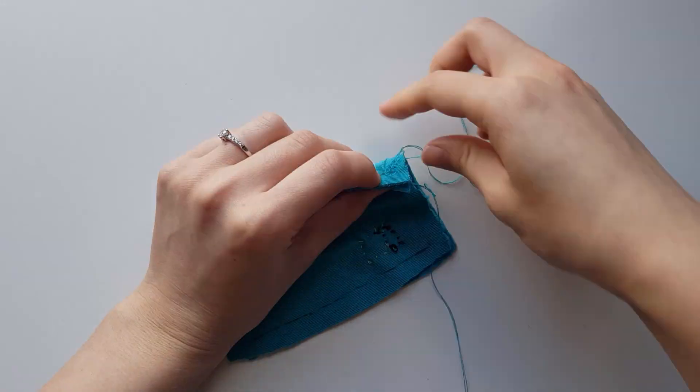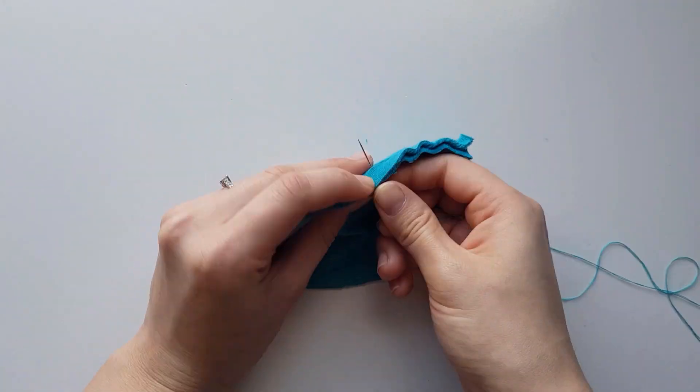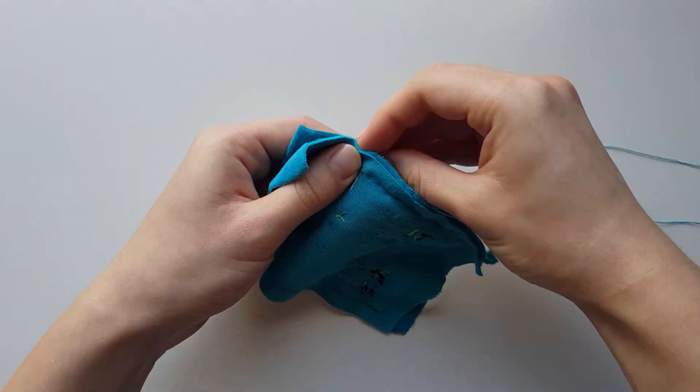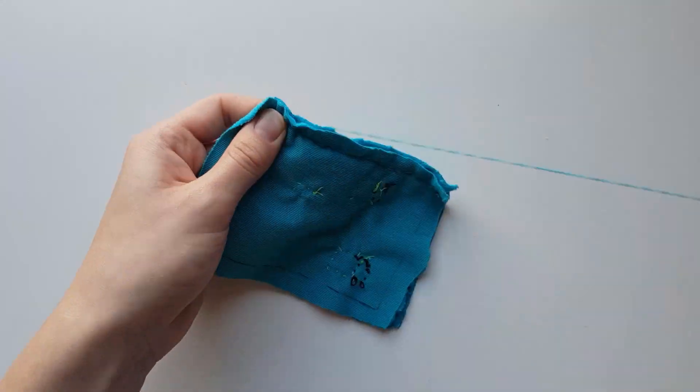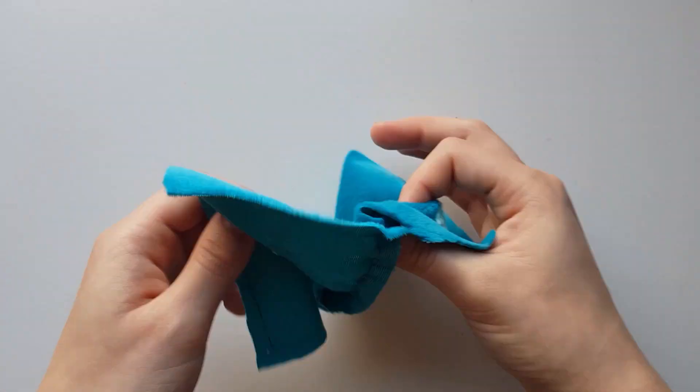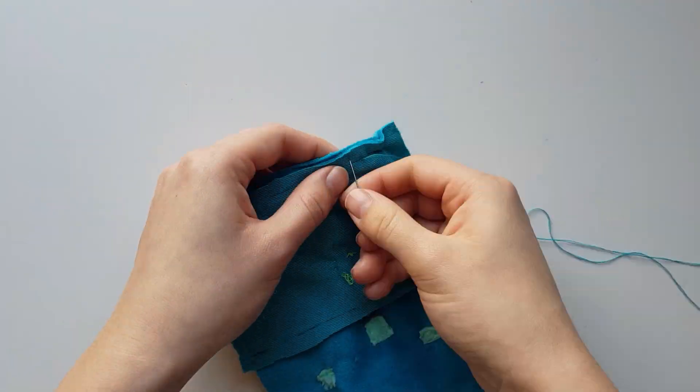Now that the body details are done, take the front body piece and sew a side piece along the longest width side. On the other side of the front body piece, sew on the other side piece.